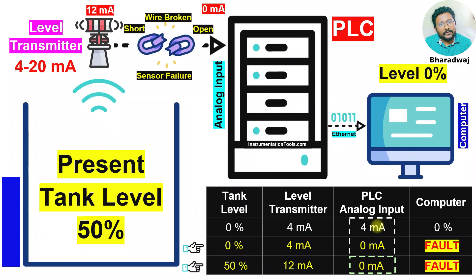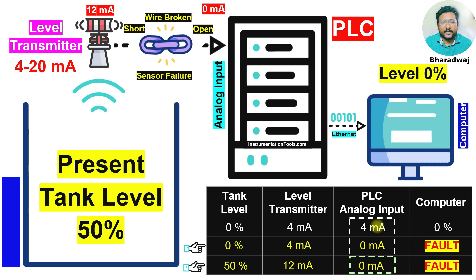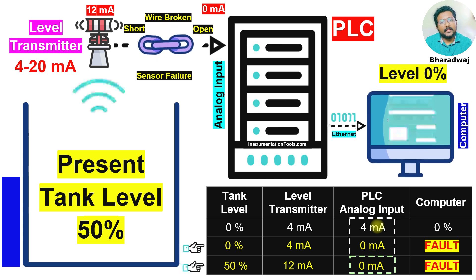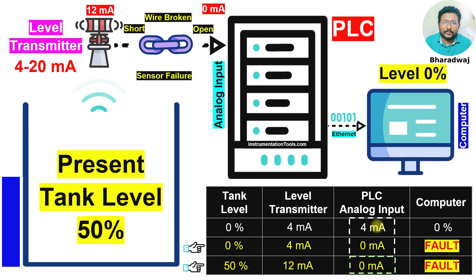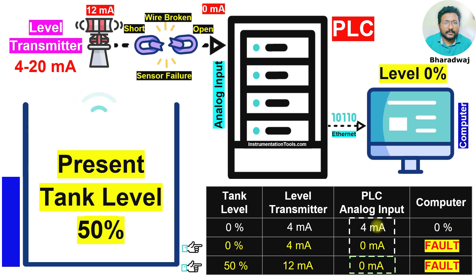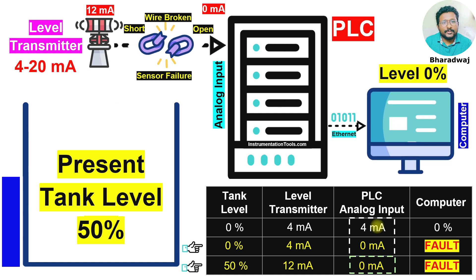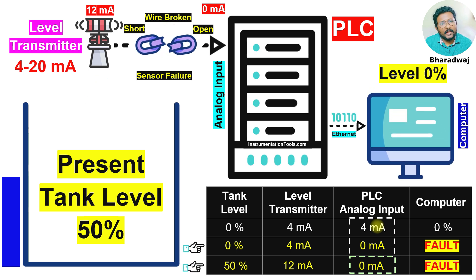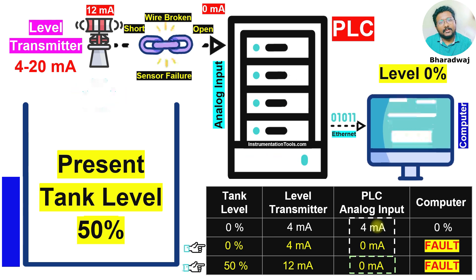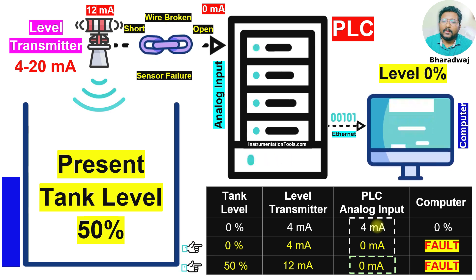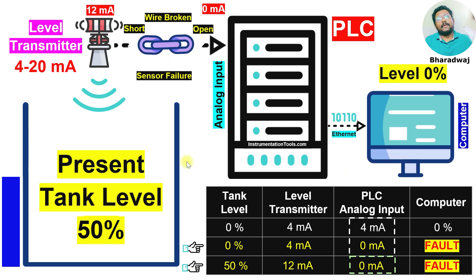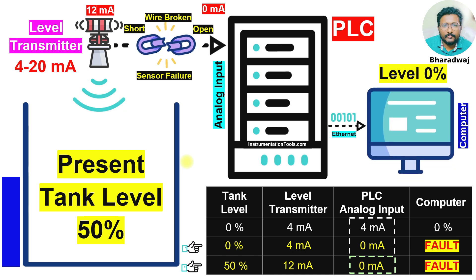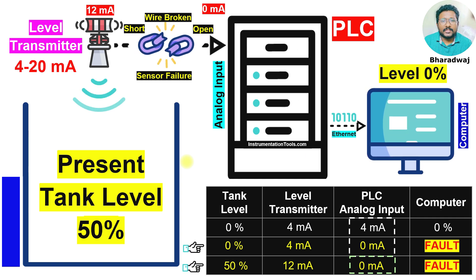In upcoming videos we will discuss clearly why 4 is selected. The key takeaway from this video is that we must not select 0 as a starting range — if you select 0, the PLC will be unable to identify the fault. To solve the dead zero problem we must use some non-zero value: it may be 1, 2, or 3 milliamperes — any value is fine, the live zero advantage will be applied. In this case the live zero advantage applies to 4 milliamperes, but it will apply to any other non-zero number as well.